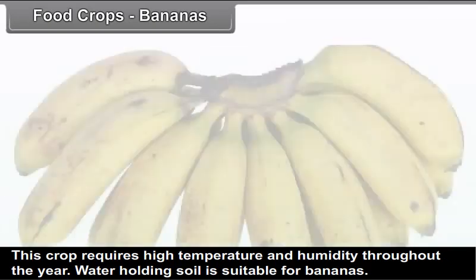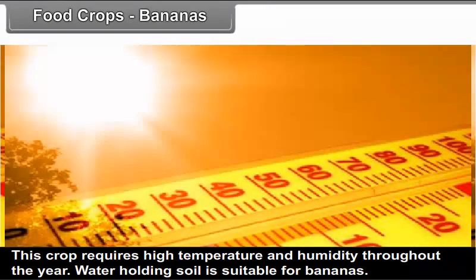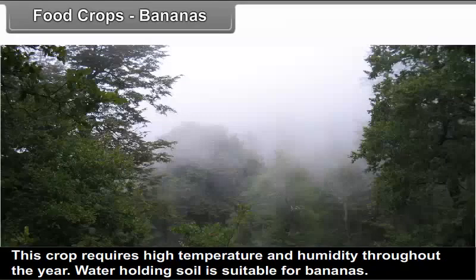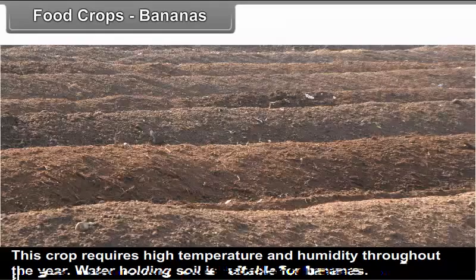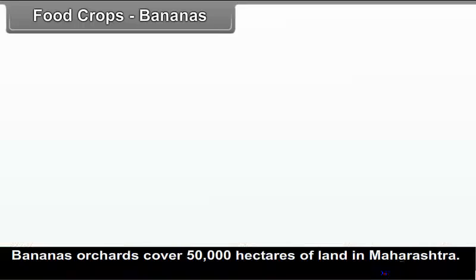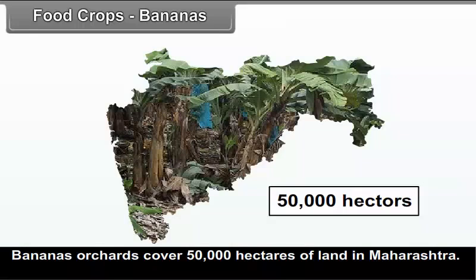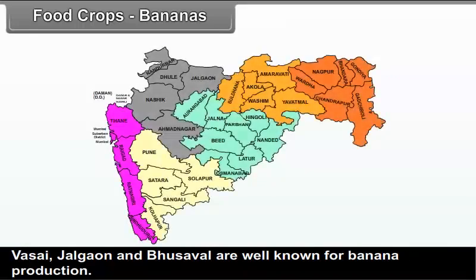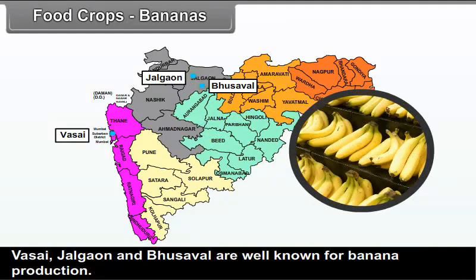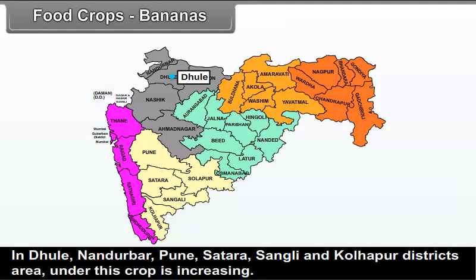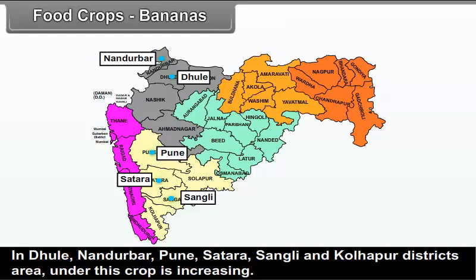Bananas: This crop requires high temperature and humidity throughout the year. Water-holding soil is suitable for bananas. Banana orchards cover 50,000 hectares of land in Maharashtra. Vasai, Jalgao, and Bhusawal are well known for banana production. In Dhule, Nandurbar, Pune, Satara, Sangli, and Kolhapur districts, the area under this crop is increasing.